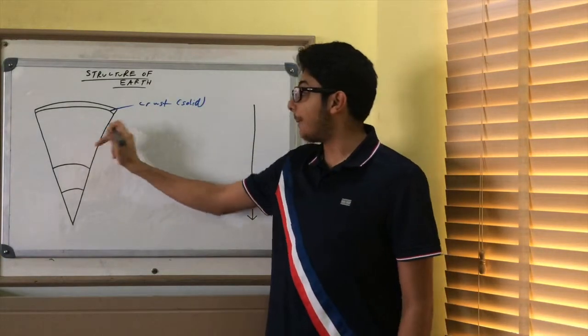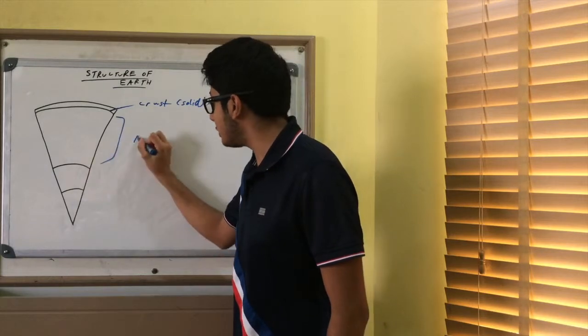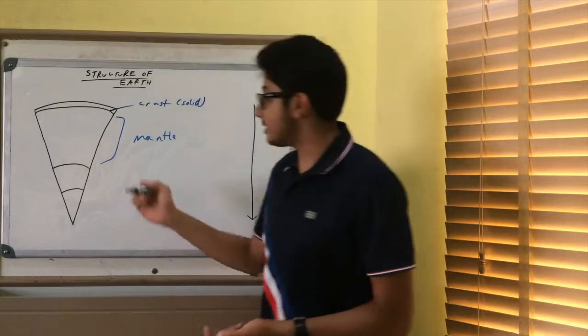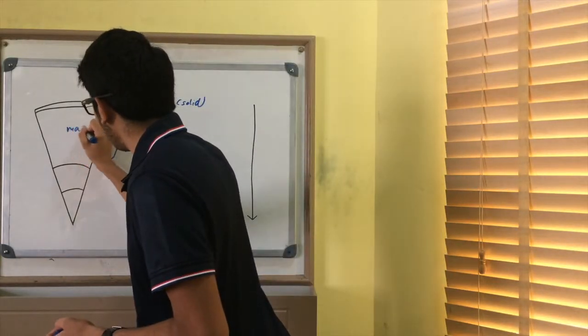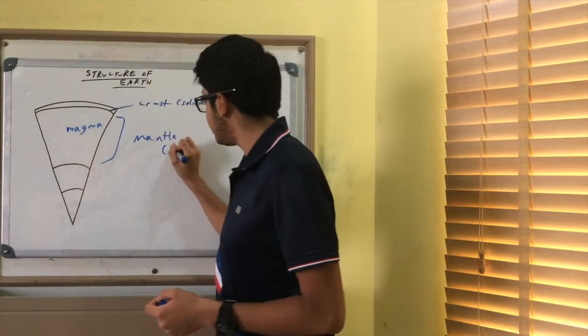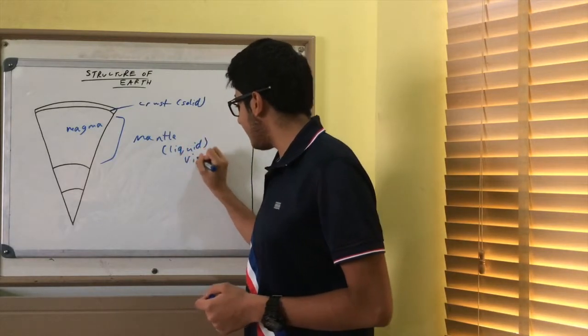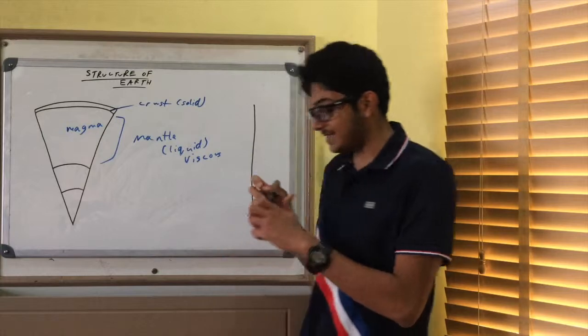Then we have our mantle. This entire section is called the mantle and it is the biggest section. What's it made out of? It's made out of liquid magma. The mantle is liquid, but it's not runny like water. It is very viscous, which means thick.